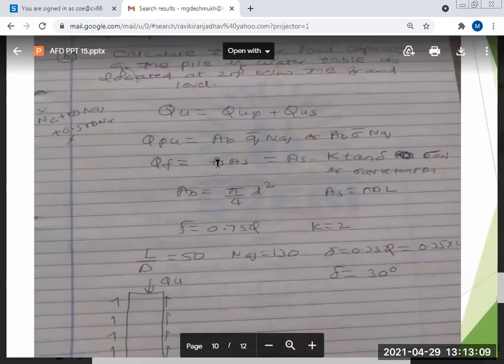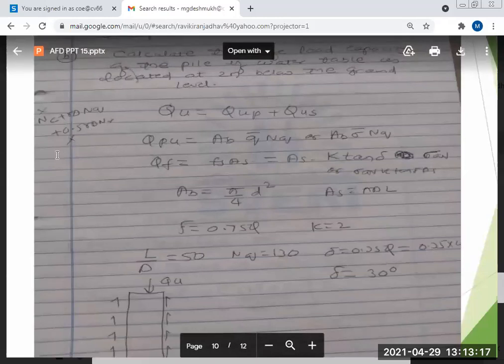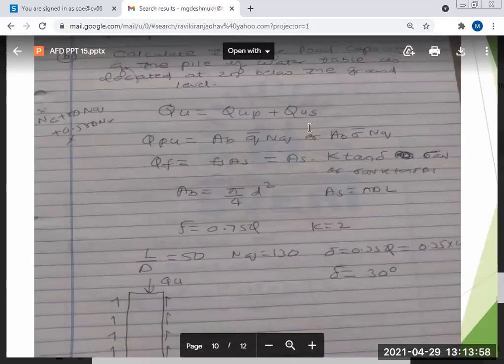So now Qup is equal to q bar into Nq. Q bar is gamma D and Nq you can discuss the formula: C Nc plus gamma D Nq plus 0.5 gamma B N gamma. It's 0.4 if it's square, 0.3 if it's circular. But this is a granular soil, so cohesion is zero. And the last term is very low compared to these, therefore this is neglected. So what is the term left now for end bearing resistance? Gamma D Nq. So that only I am taking here: gamma D Nq into AB. AB how do you get? The bottom. It is given by pi by 4D square. So this is the first part: gamma D Nq into pi by 4D square. This is the end bearing resistance.